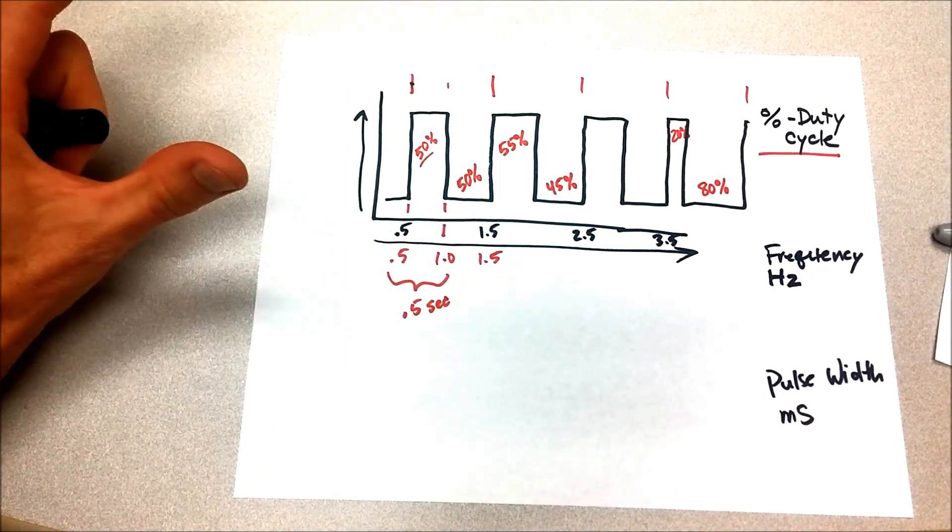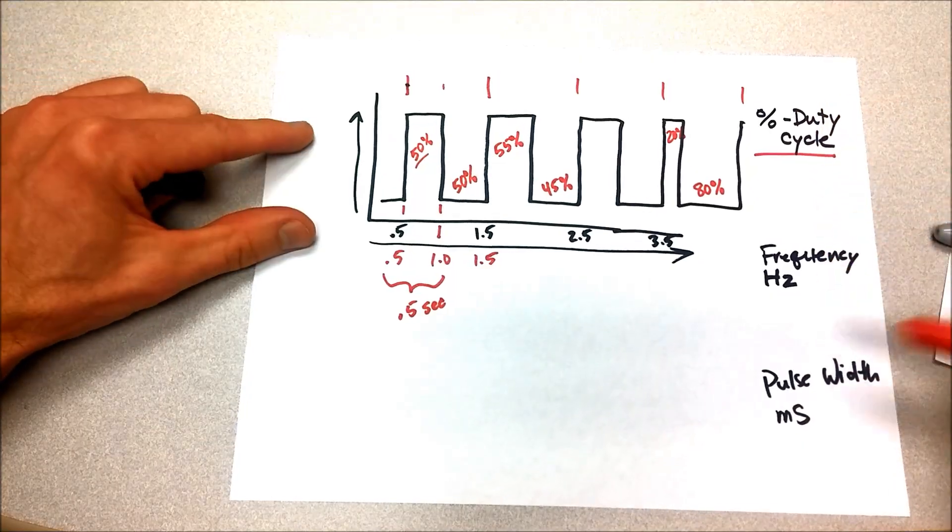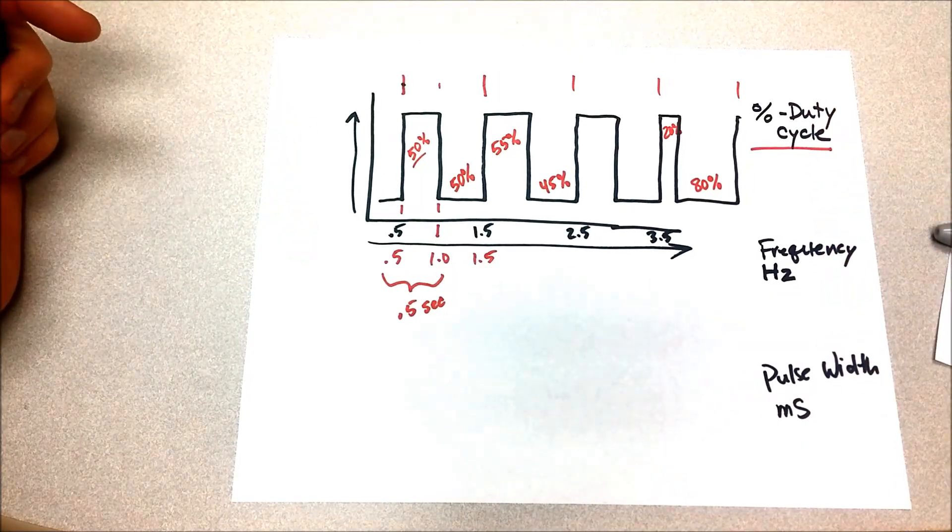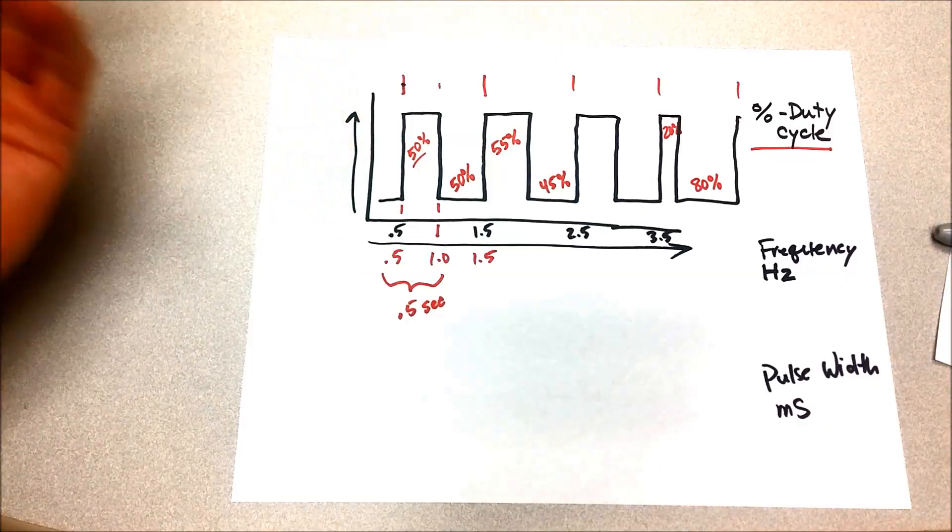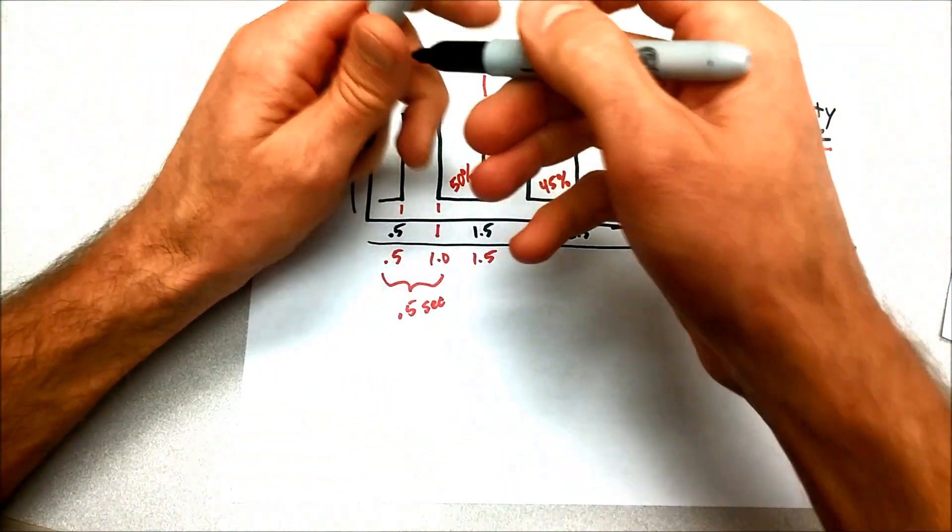Hopefully those all make sense, and hopefully that clarifies the difference between those three different terms. They're all different, different ways of measuring sometimes even the same signal. It is possible to have an analog signal, such as this, and also measure its frequency, how many cycles it happened per second.